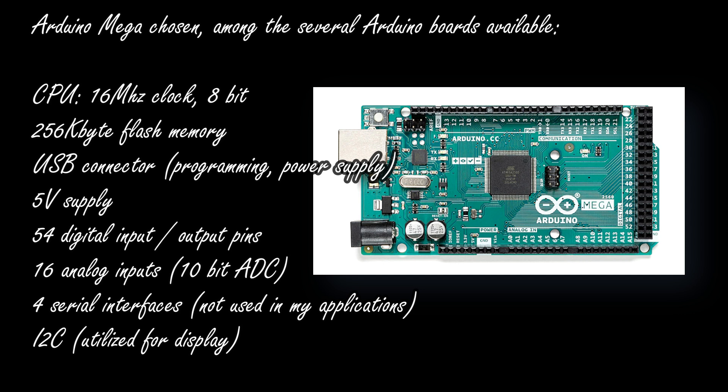Among those platforms I have utilized the Arduino Mega in my recent projects, and in this video you will see the Arduino Mega covered. The Arduino Mega is developed around an 8-bit microprocessor running at 16 MHz, with 256 kilobytes of flash memory. It also has a USB connector which is used to program it, and the Arduino Mega is powered by 5 volts DC.